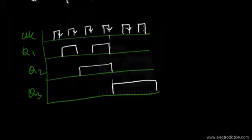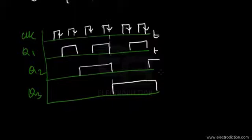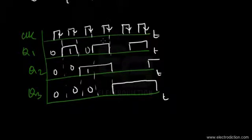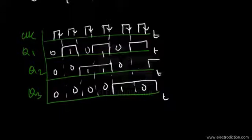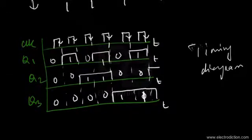Looking at the timing diagram: comparing the negative edges of the clock pulses, we can see the counter was at state zero-zero-zero, then moved to zero-zero-one, then zero-one-zero, zero-one-one, one-zero-zero, one-zero-one, and so on until it reaches the seventh state. That's the timing diagram for the 3-bit synchronous up counter.